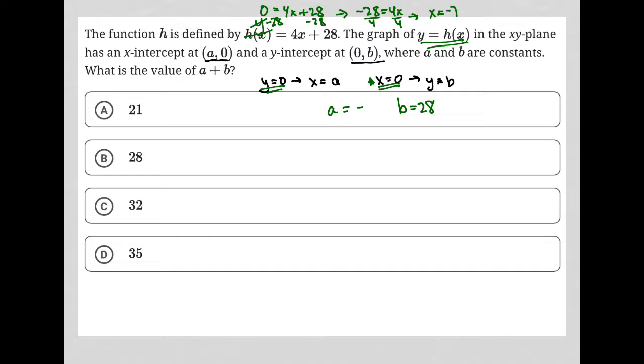So a is equal to negative 7. So the solution, a plus b, would just be negative 7 plus 28, which is equal to 21. And therefore, the correct answer here is choice A.